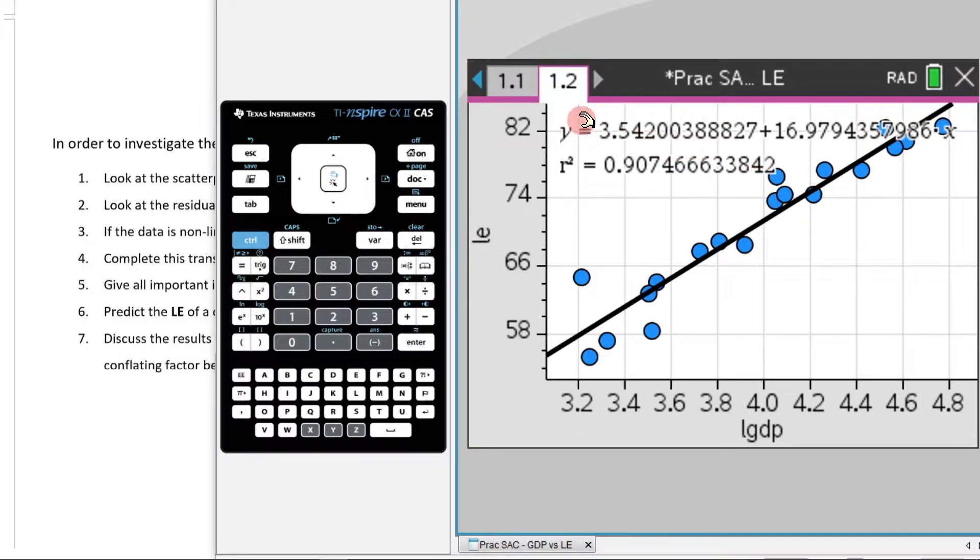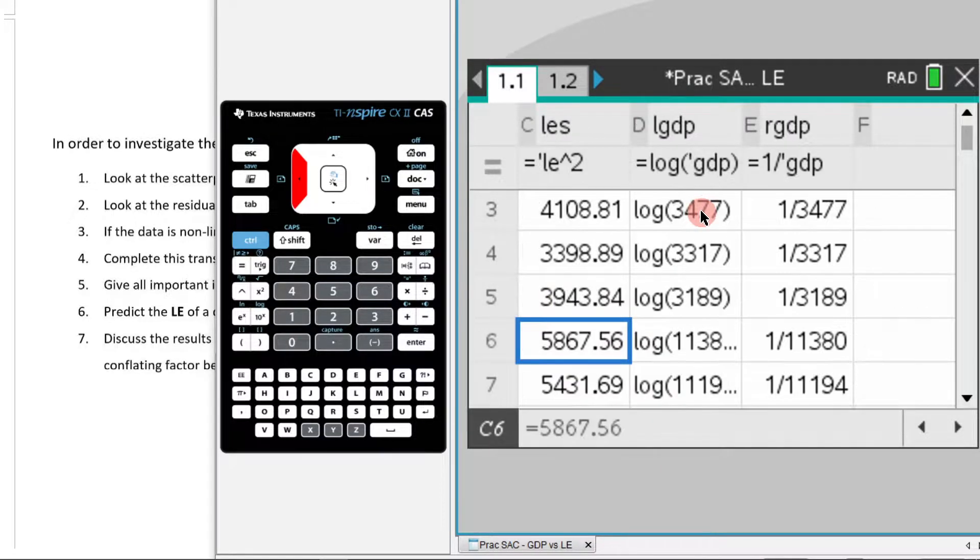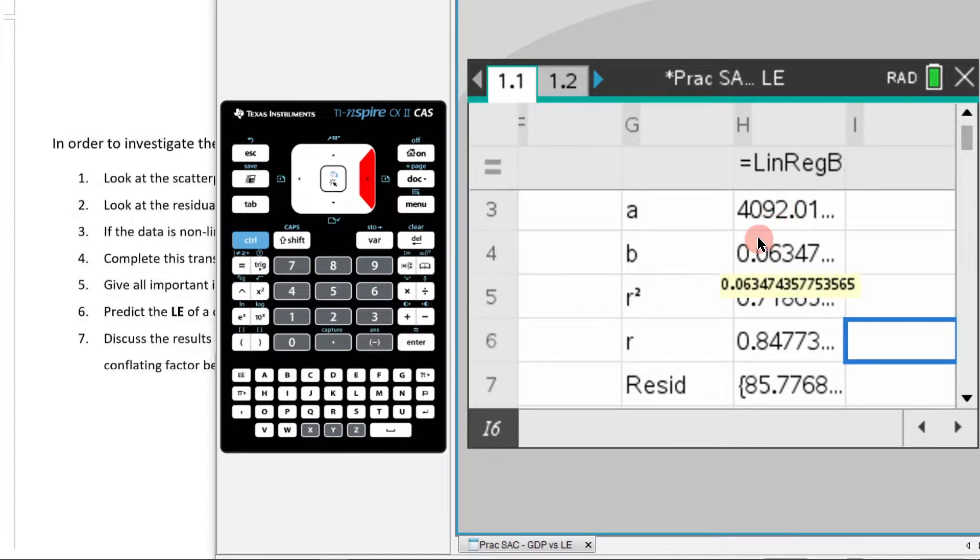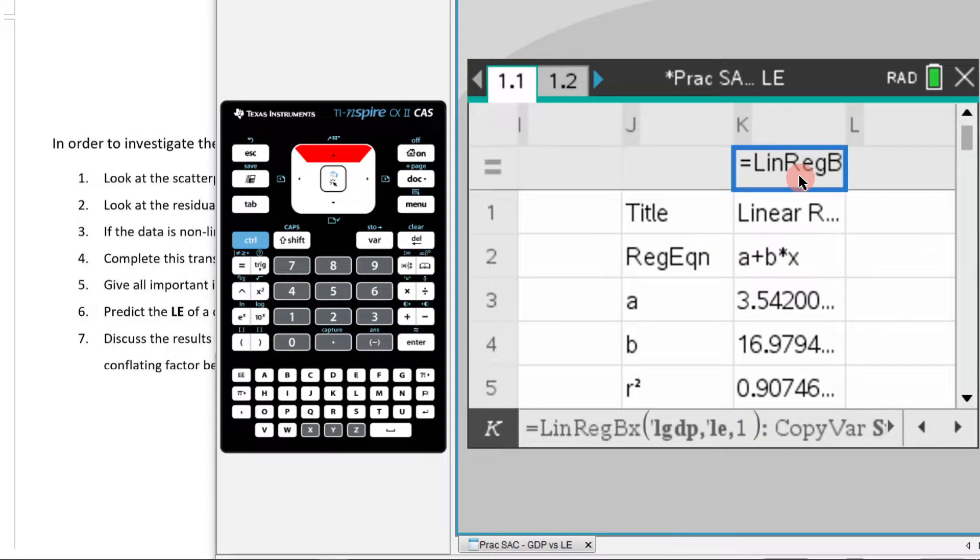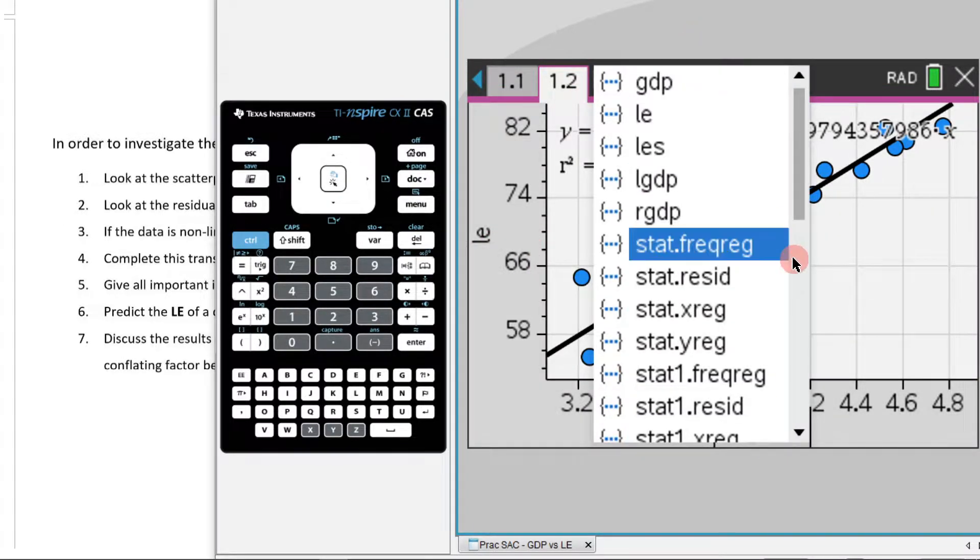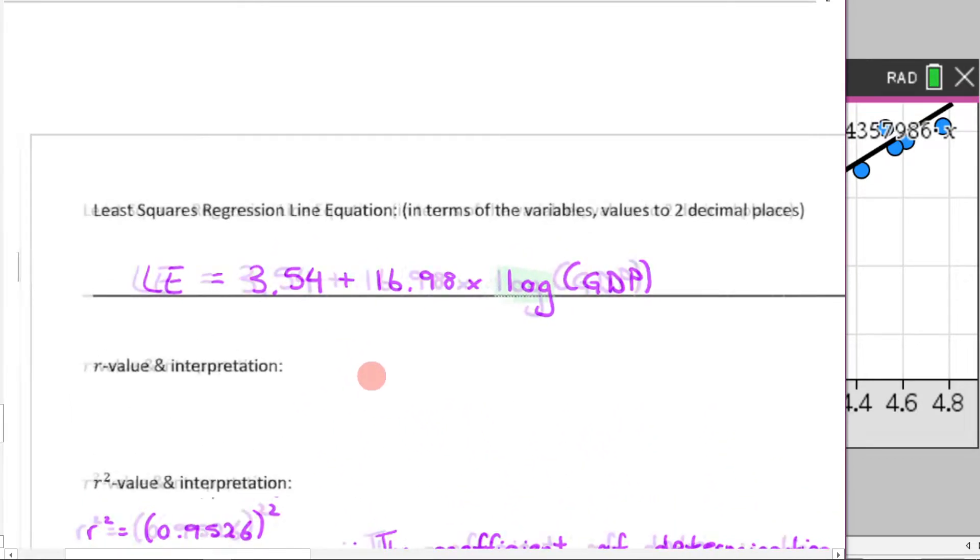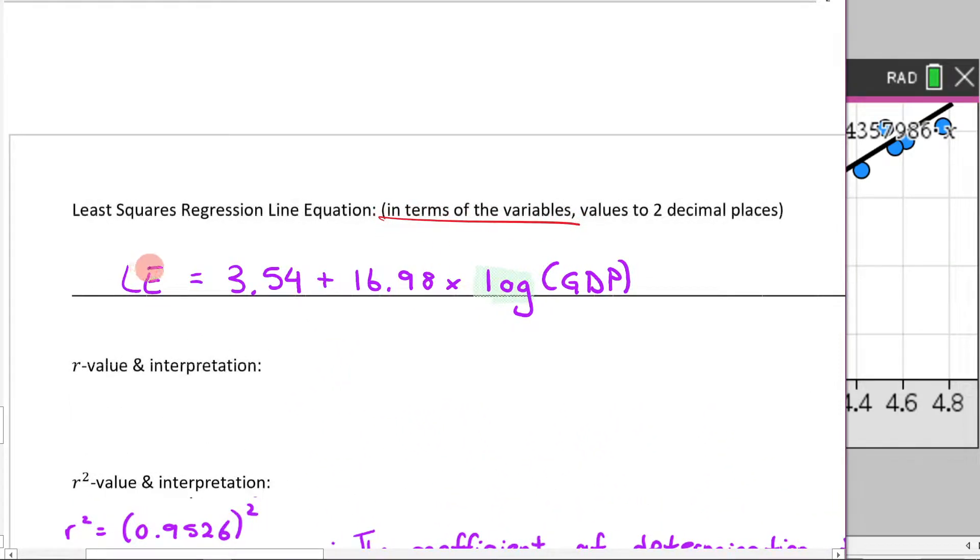The other way you could find your least square regression line is to come back over here and look at your data for the log GDP. So that's the correct transformation. Now, you've got to remember which one you did it for. So it looks like it was our second transformation here. You can double check it just by coming here and double checking here. It's the log of the GDP and the LE. So that's giving you the A value and the B value. Or just make sure that you've got the correct scatter plot here by checking your X and Y variables. And there it is. So we're now just going to write that in here.